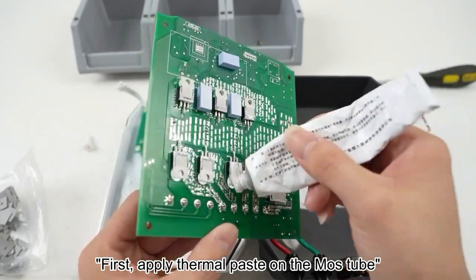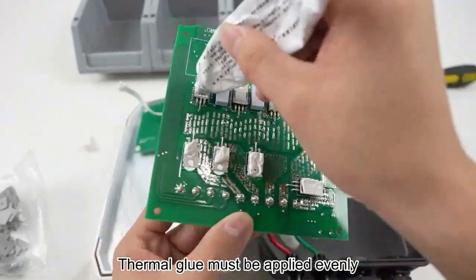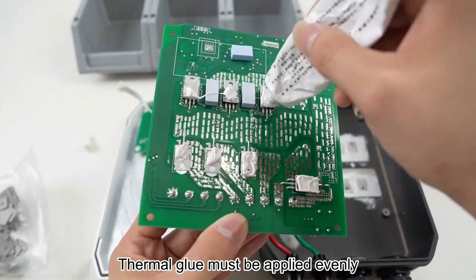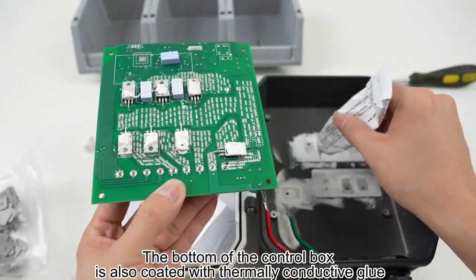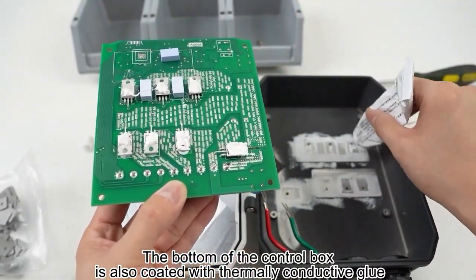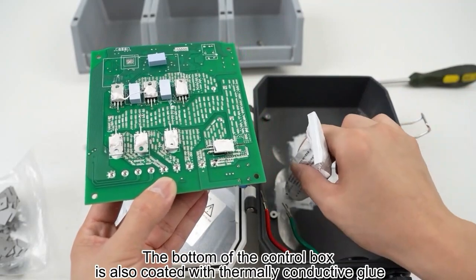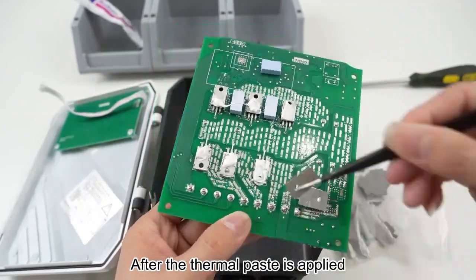First, apply thermal paste on the MOS tube. Thermal glue must be applied evenly. The bottom of the control box is also coated with thermally conductive glue.